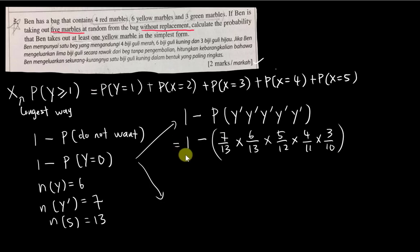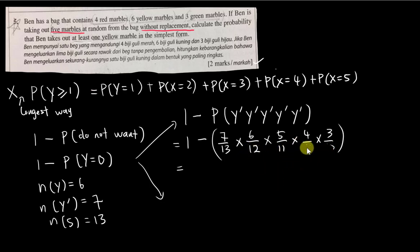So the selections go: seven over thirteen, six over twelve, five over eleven, four over ten, three over nine. Multiply them all together, then use one minus that result. I made a small mistake earlier — the denominators should be 13, 12, 11, 10, 9. Typing into the calculator gives the result, and then one minus that answer gives 422 over 429.